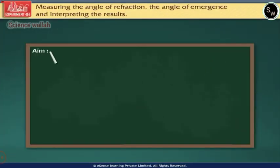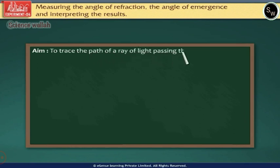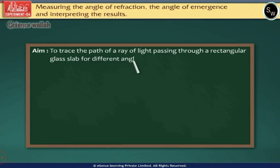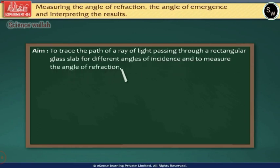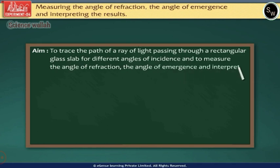The aim of the experiment is to trace the path of a ray of light passing through a rectangular glass slab for different angles of incidence, and to measure the angle of refraction, the angle of emergence, and interpret the results.